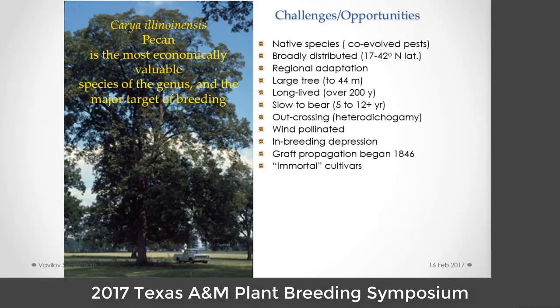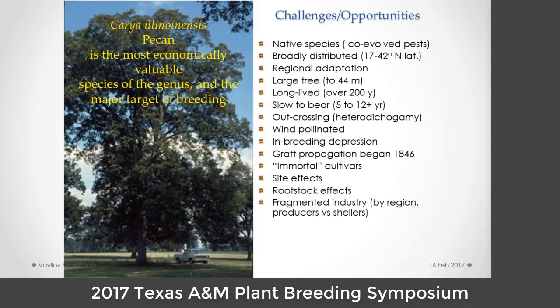There are immortal cultivars — once propagated, they can be maintained and passed down, and things that work tend to be maintained in regional industries. We see tremendous site effects on tree performance, rootstock effects detectable in terms of nutrient uptake and patterns of phenology. We have a fragmented industry divided by region, with different cultivars grown in different areas. Shellers are often antagonistic to growers. We have a fragmented research community divided into states, with increasing intellectual property issues that tend to isolate us. Apart from that, no problems.